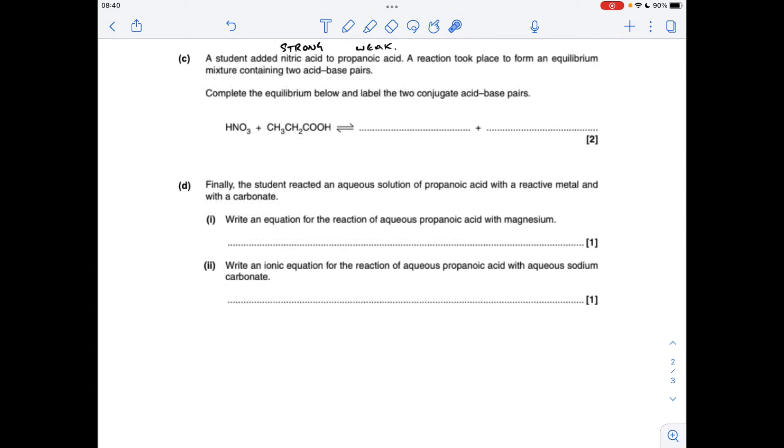Moving on to Part C now, we've got a reaction between two acids effectively, but one's strong and one's weak. Nitric acid, hopefully everyone knows, is a strong acid. Propanoic acid is a weak acid, carboxylic acids are weak. So what's going to happen, the strong acid is going to donate its proton to the weak acid, and the weak acid is going to end up acting as a base. So I'll just quickly explain the conjugate acid-base pair stuff.